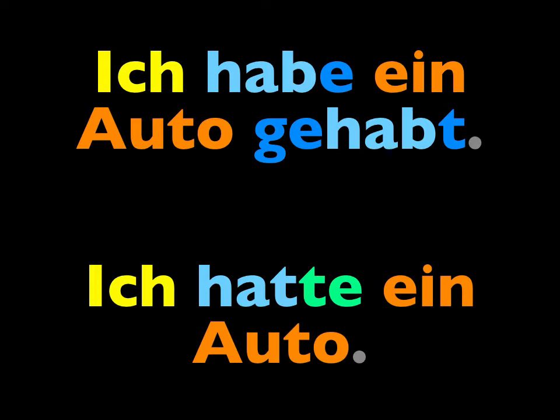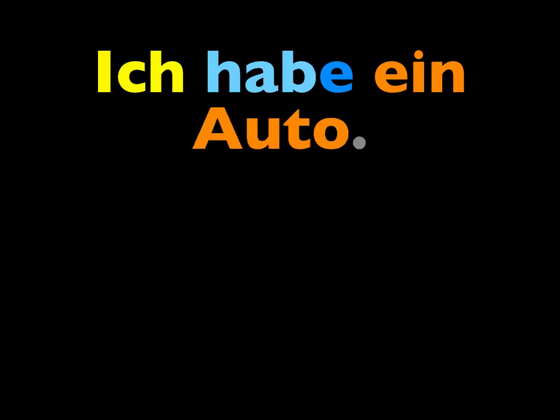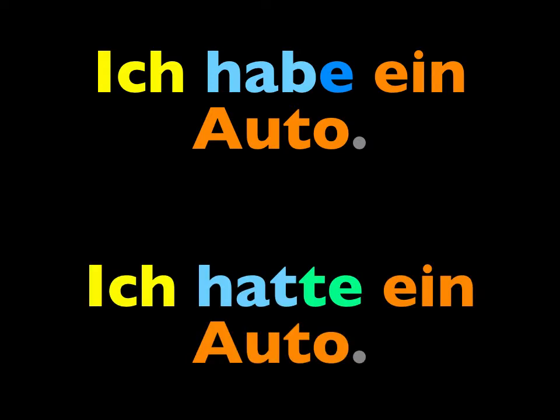Let's practice haben in this simple past tense. I'll make a simple statement with haben in the present tense and you'll change it to the past tense. For example, I'd say ich habe ein Auto — I have a car — and you change it to ich hatte ein Auto. I'll read the present tense and pause for you to make the past.